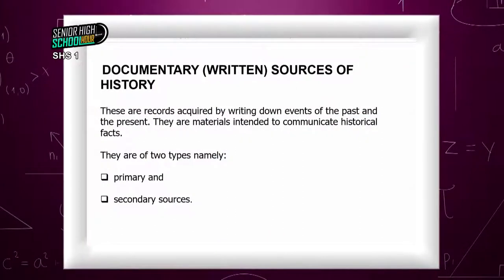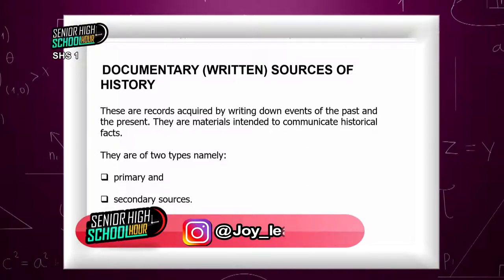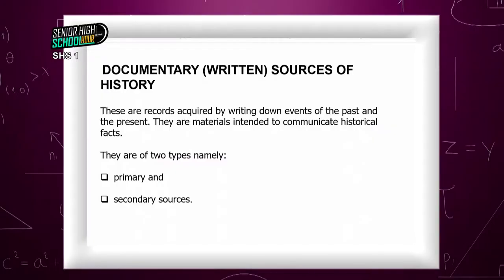Documentary sources of history are records acquired by writing down events of the past and the present. They are materials intended to communicate historical facts. There are two types of documentary sources: primary and secondary sources. So within written records, we have primary sources and secondary sources.